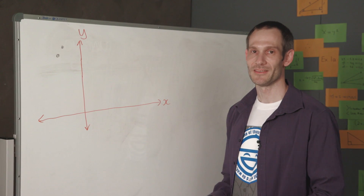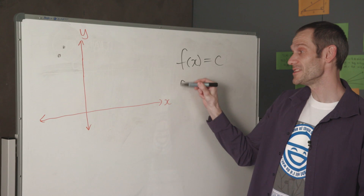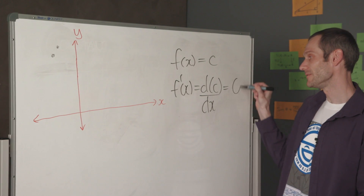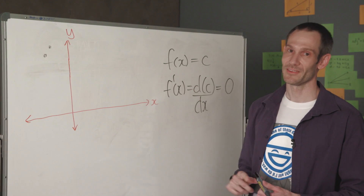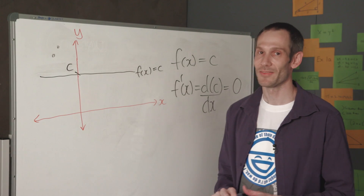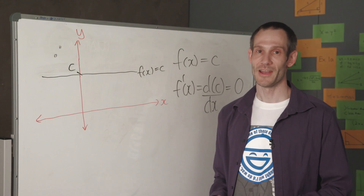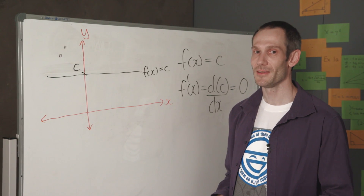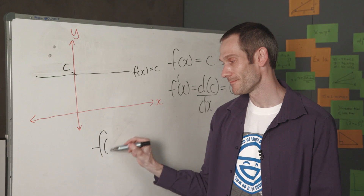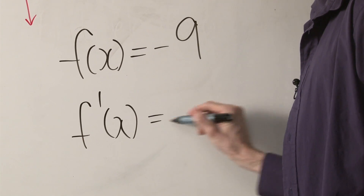Our first rule for differentiation is how to differentiate a constant function. So let's say I've got a function f of x which is just equal to a constant value c. When I differentiate a constant function, the derivative equals 0. This is quite obvious when we consider the graph of a constant function — it is simply a horizontal line cutting through the y-axis at the point c. Any tangent line drawn to it will also be horizontal, and any horizontal line has a slope of 0. Given the derivative tells us the slope of the tangent line, the derivative must equal 0. So for example, if I had f of x equals minus 9, the derivative of this function is simply equal to 0.